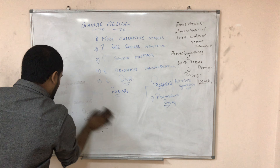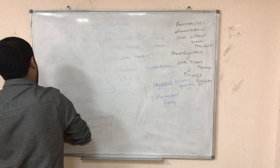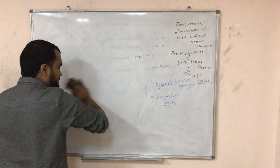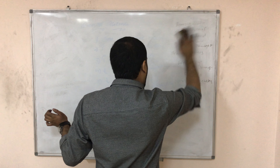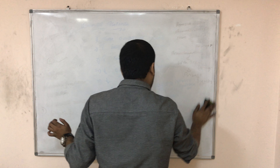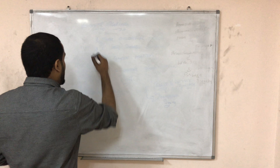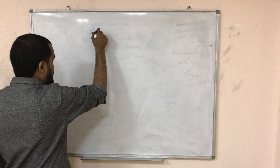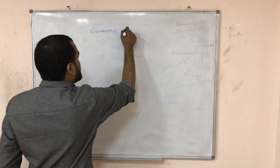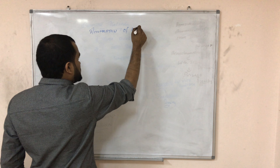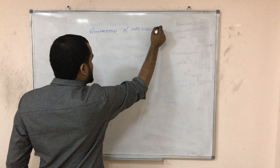Next we are going to study accumulation of intracellular substances. In our body many things can accumulate: fats or lipids, hyalines, pigments, and proteins. Let's see what pathological changes will occur.